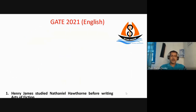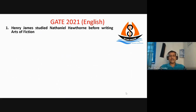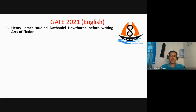The first question asked was: Henry James studied which author before writing his essay 'The Art of Fiction'? The answer was Nathaniel Hawthorne. It was an MCQ question. Henry James was too much influenced by the works of Nathaniel Hawthorne and he made a book-length study on this American author.